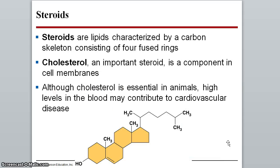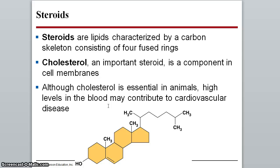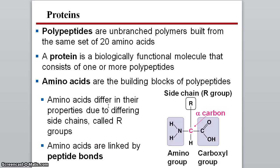Steroids are another type of lipid, characterized by a carbon skeleton with lots of fused rings. Cholesterol is the most important steroid we'll discuss — it's critical for membrane fluidity in animals. High levels of cholesterol can cause cardiovascular disease, but some cholesterol is necessary, so cutting it out entirely isn't good for you.